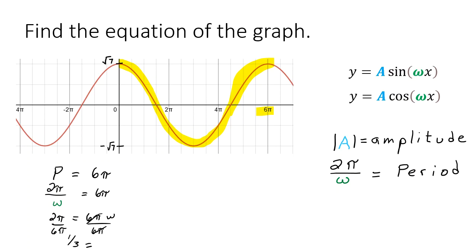Okay amplitude. So this graph is trying to be different. Looks like it's bottoming out here at negative square root seven and topping out at positive square root seven. So let's get a little more technical here. So I know the absolute value of a is square root seven.